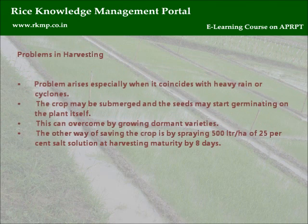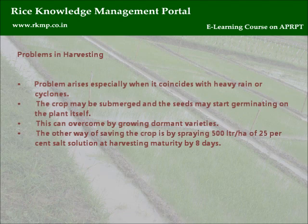Problems in harvesting arise especially when harvesting coincides with heavy rain or cyclones. The crop may be submerged and the seeds may start germinating on the plant itself. This can be overcome by growing dormant varieties. Another way of saving the crop is by spraying 500 litres per hectare of 25% salt solution at 8 days before harvesting maturity.